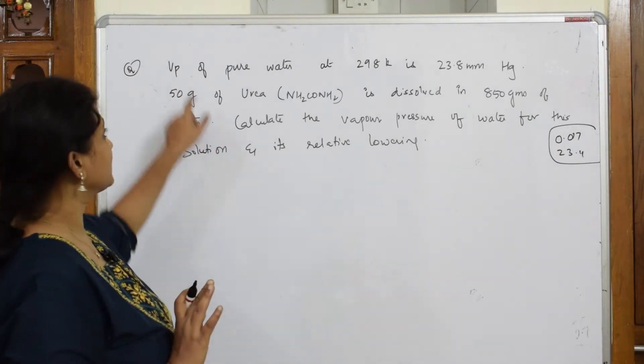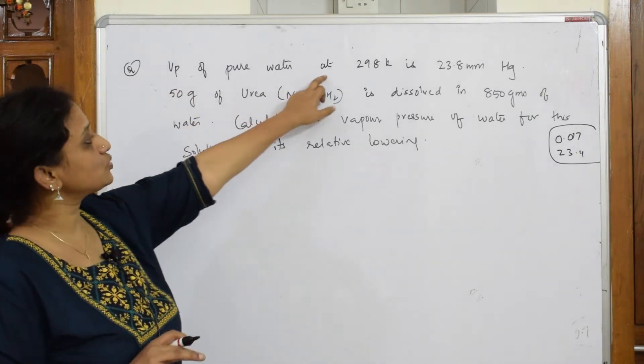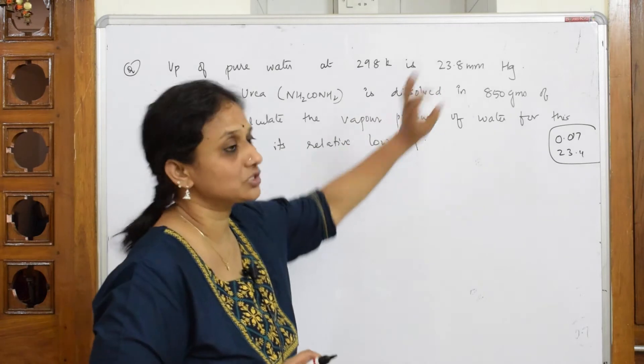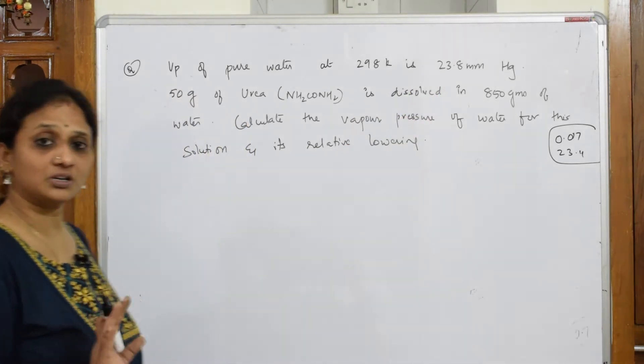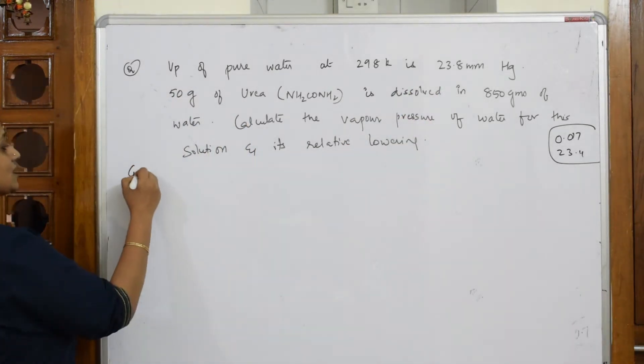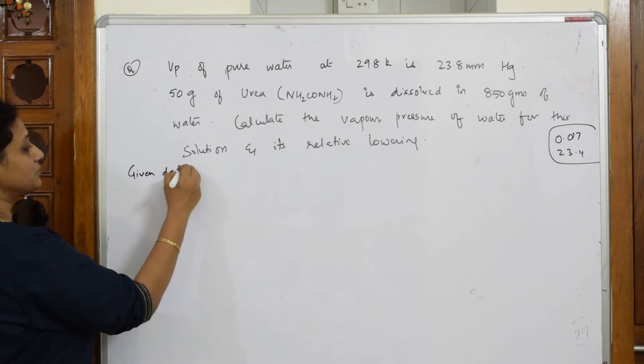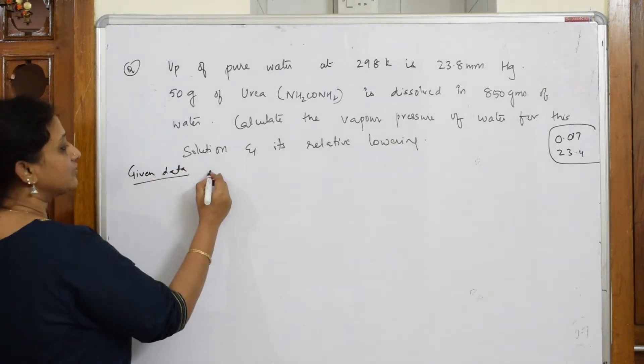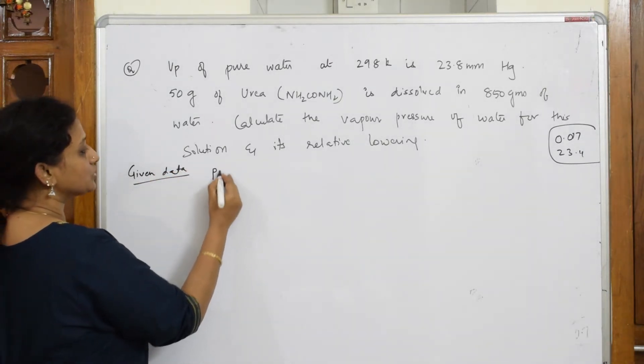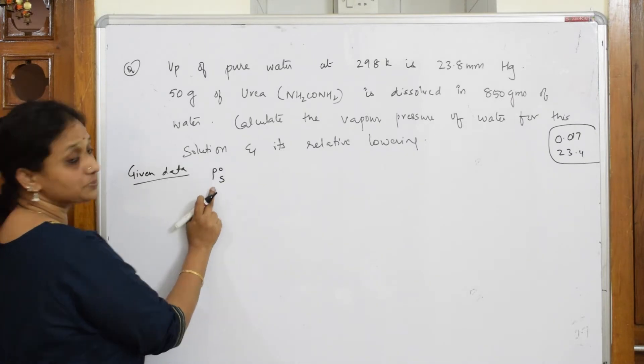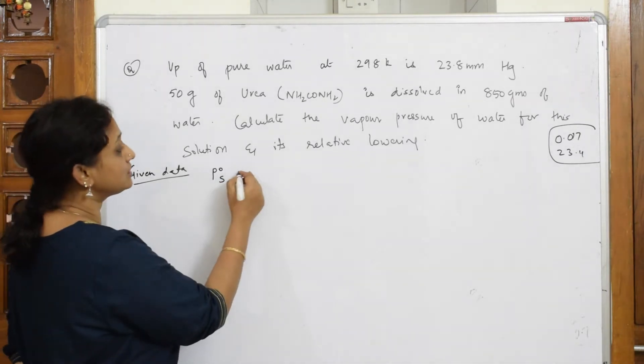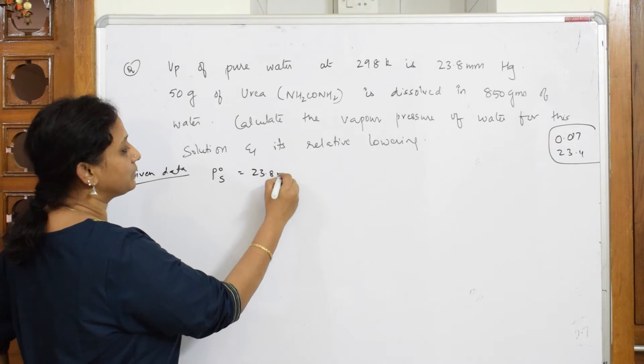Let's see: vapor pressure of pure water at 298 Kelvin is given. Vapor pressure of pure water - remember, so as soon as the data is given, your terminology is very important. They have given me vapor pressure of pure solvent, that is P naught s, which is equal to 23.8 mm of mercury.